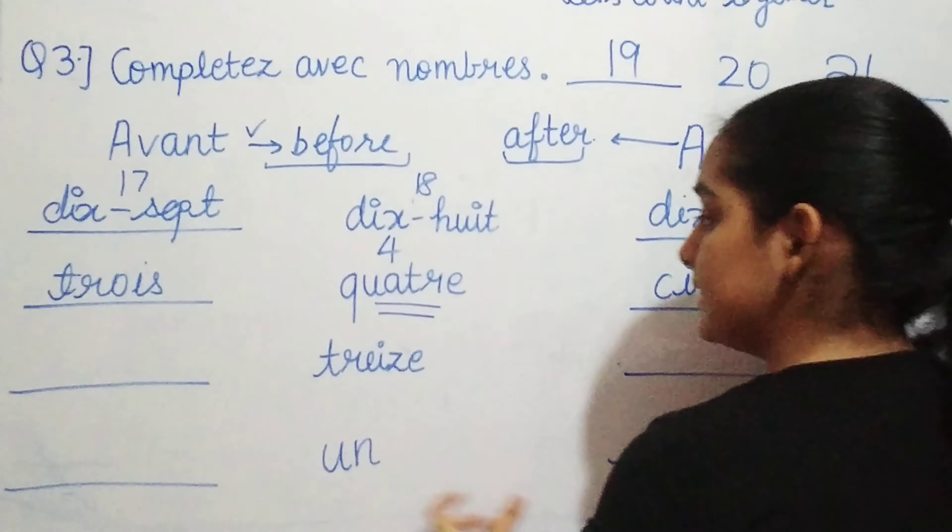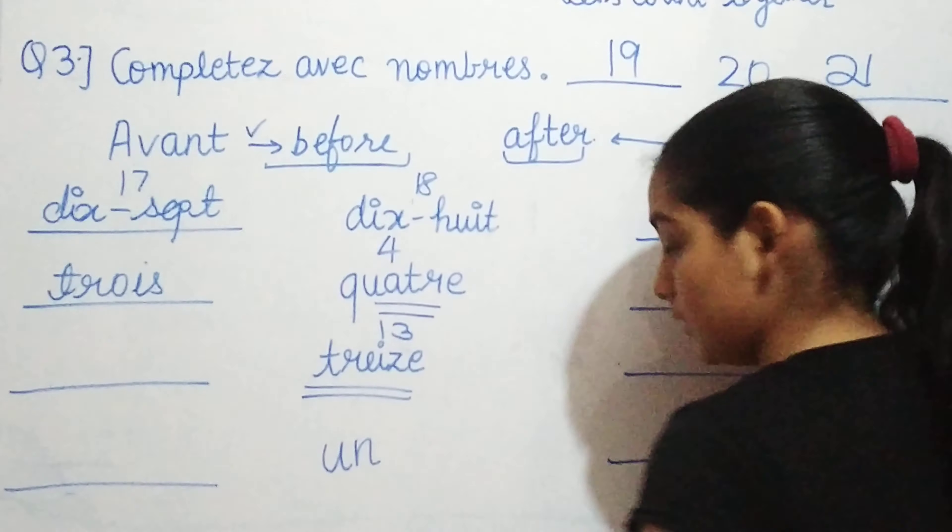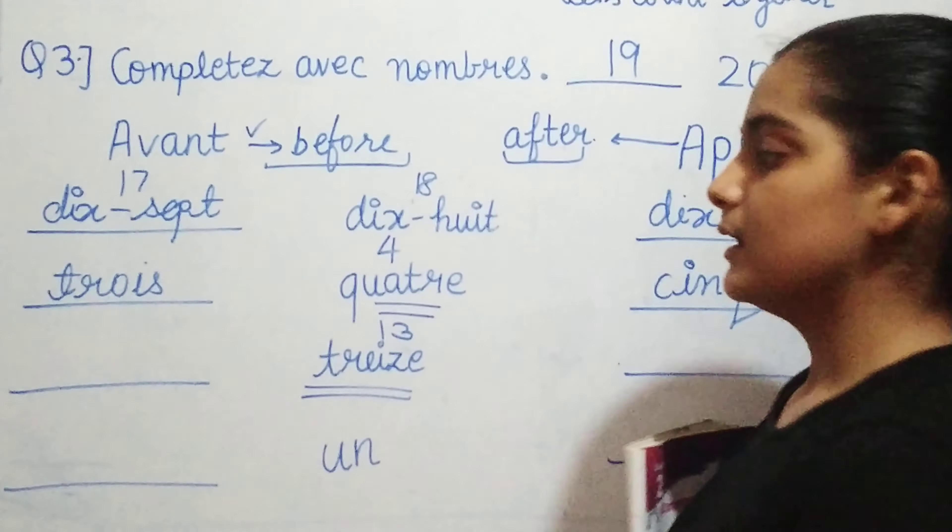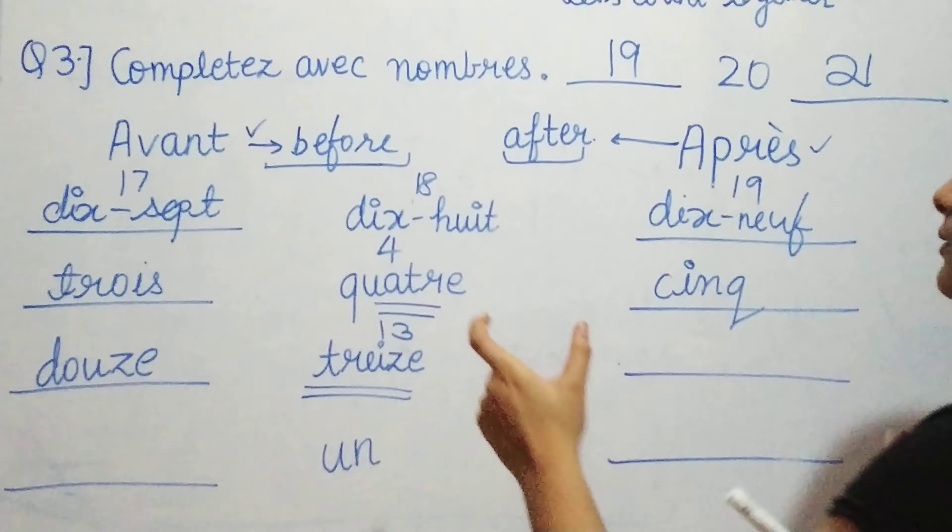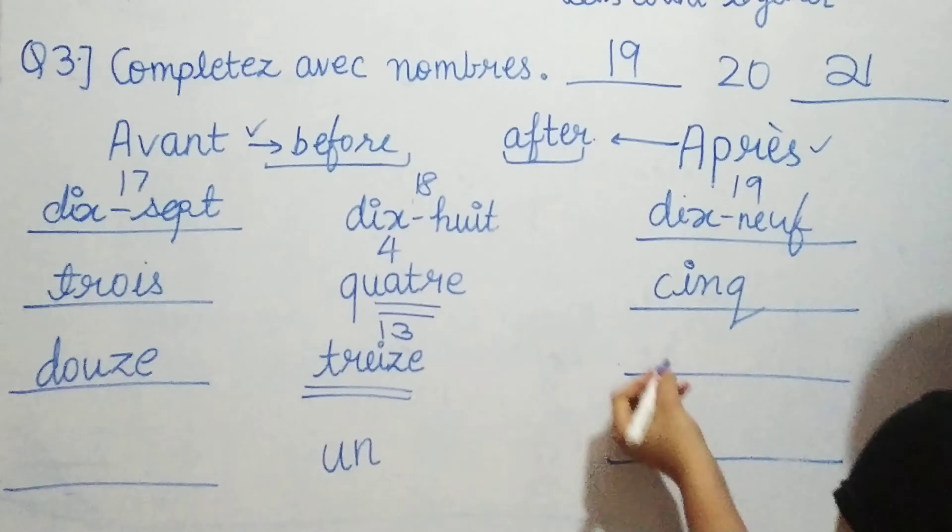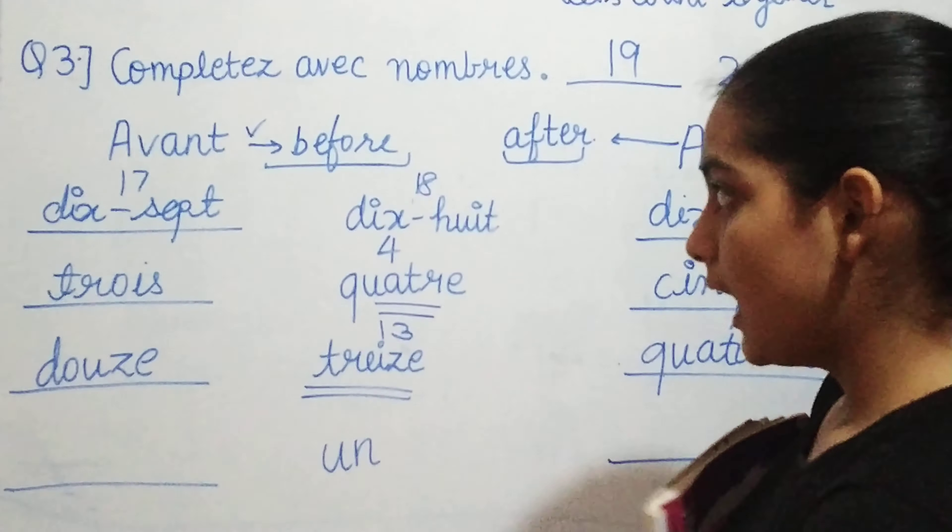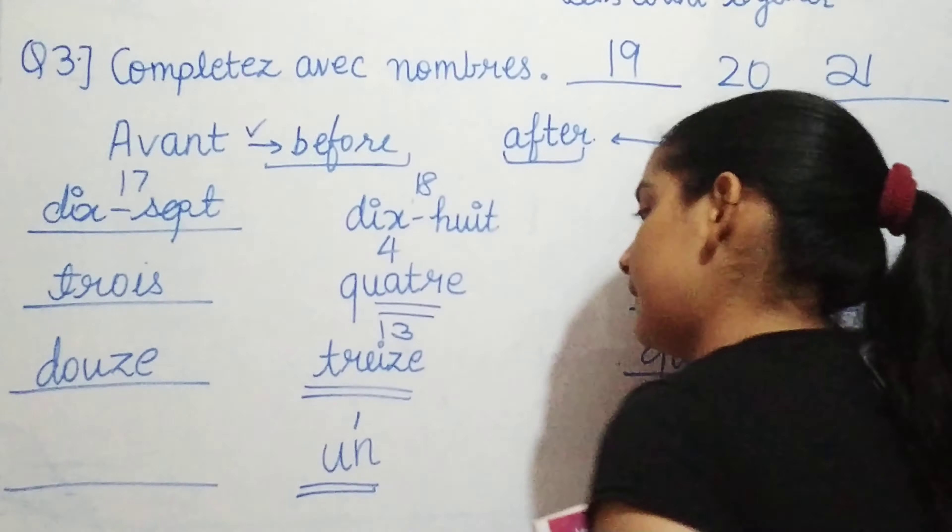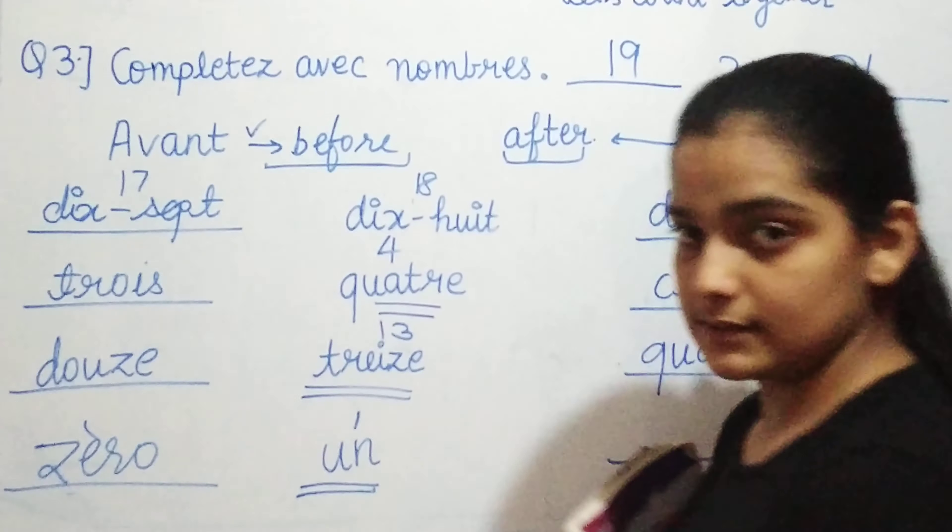Coming to the next, that is treize. What is this treize, guys? This is your thirteen. Now, what comes before thirteen? Thirteen comes before twelve. So we'll write twelve. What is twelve in French? Douze. And what comes after thirteen? After thirteen, it's fourteen. We say it as quatorze.